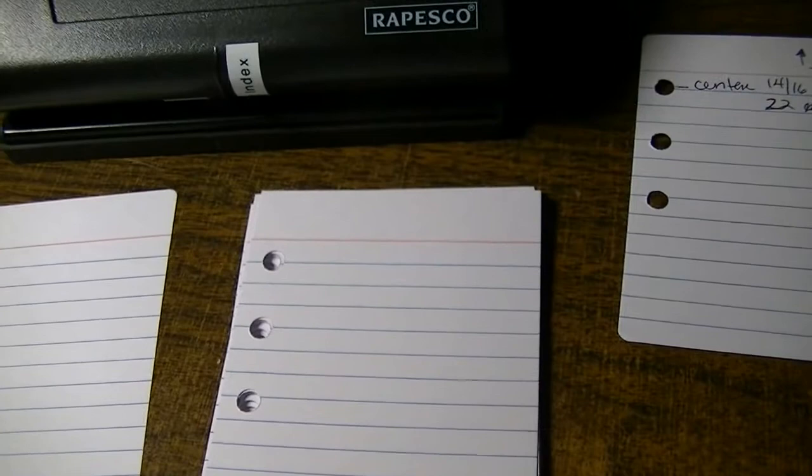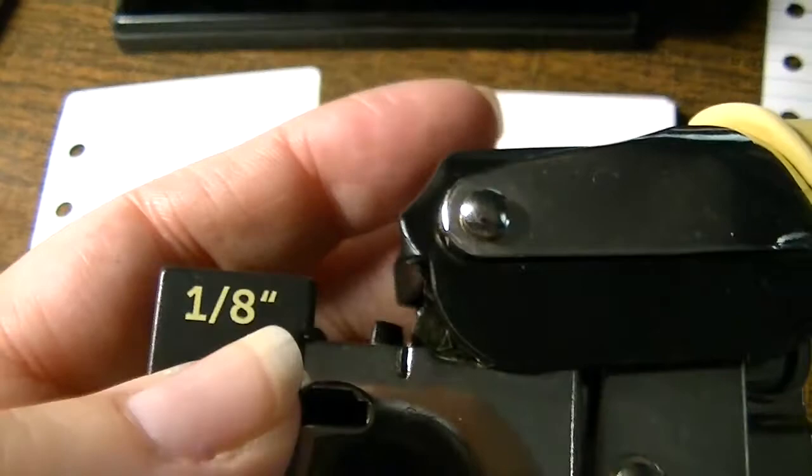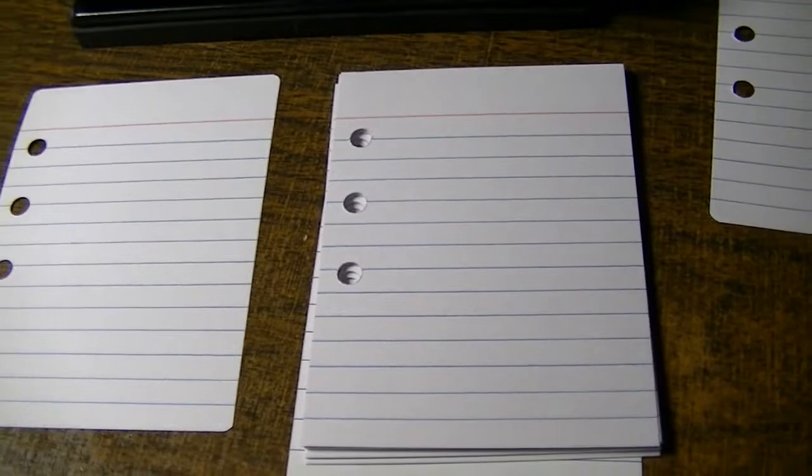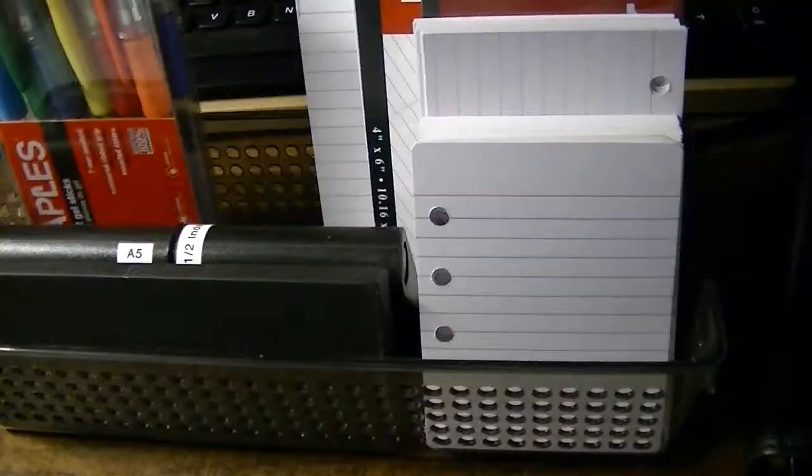And because I am slightly ever so particular, I also round the corners. And obviously that's something that's a personal preference. And what I use is the eighth inch We R Memory Keepers corner chomper. And you can do several sheets at the same time. And that way I'll pack them away and I'll show you where I store them once I do a little rounding.